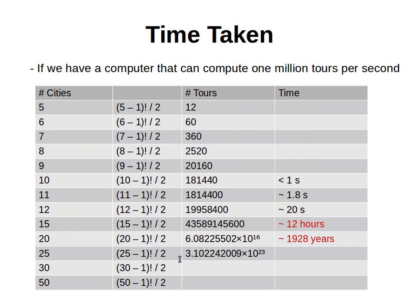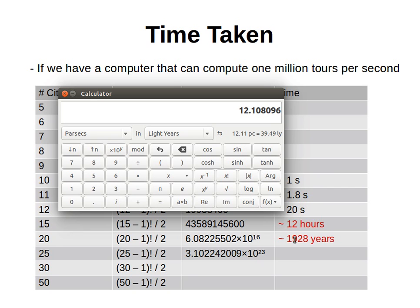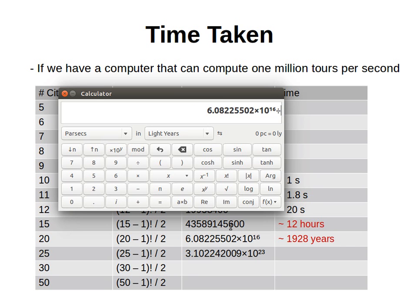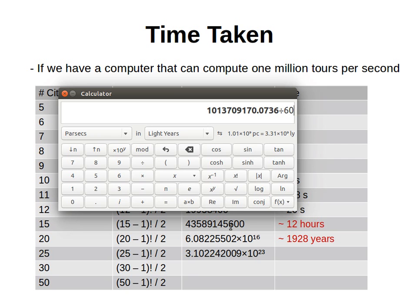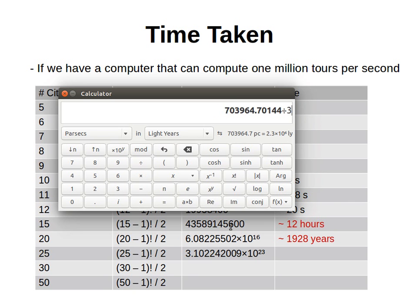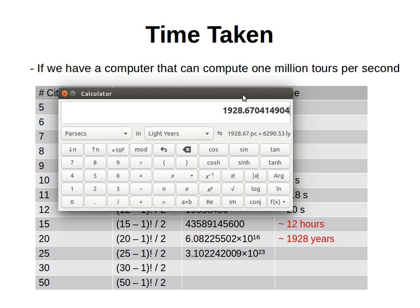What if the number of cities is 20? With 20 cities: 19 factorial divided by 2 is the number of possible tours. Dividing by 1 million gives seconds, by 60 gives minutes, by 60 gives hours, by 24 gives days, by 365 gives years. It takes our computer 1,928 years to process all possible tours when the number of cities is 20.